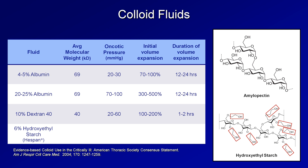One of the most common hydroxyethyl starches is HESPAN. It has a huge average molecular weight of 450 kilodaltons and conveys a similar oncotic pressure to 5% albumin and similar volume expansion to 10% dextran 40. Its duration of volume expansion is variable, ranging from 8 to 36 hours. There are many, many different types of dextrans and hydroxyethyl starches, each with a unique set of characteristics.